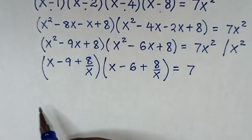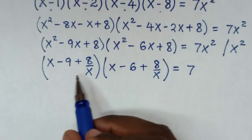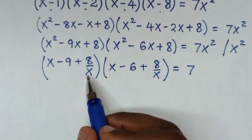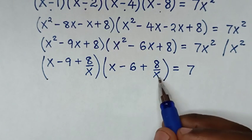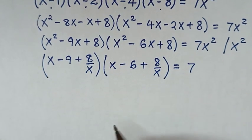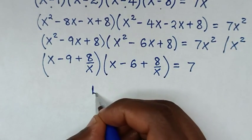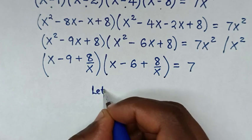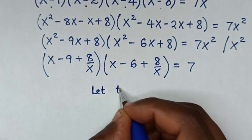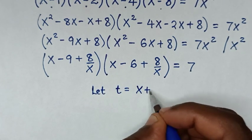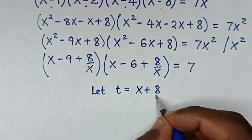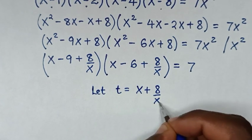Then in the next step, we notice that x plus 8 over x appears in both brackets and is common, so we let t equal to x plus 8 over x.